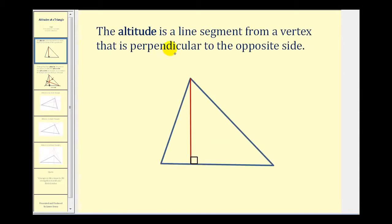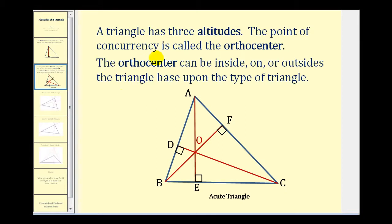The altitude is a line segment from a vertex that is perpendicular to the opposite side. This red segment is an altitude because it connects a vertex to the opposite side and is perpendicular to that side. A triangle has three altitudes, one from each vertex to the opposite side.